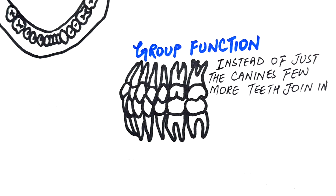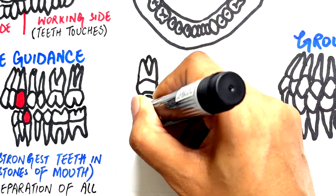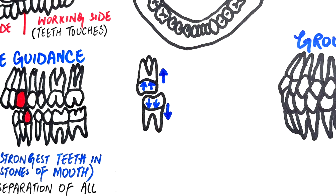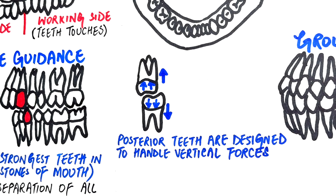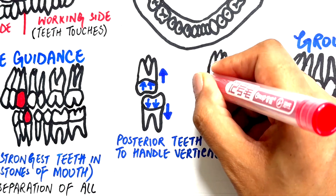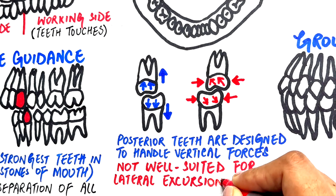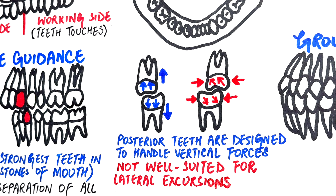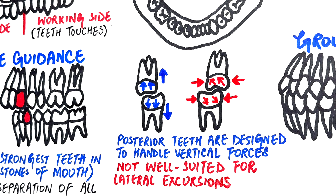Our posterior teeth are designed to handle vertical forces but are not well suited for lateral excursive movements — that's why they should stay apart during side movements, and that's exactly what canine guidance helps achieve. During chewing, canine guidance helps maintain a narrow chewing cycle, guiding the jaw to rely mostly on vertical forces and minimizing harmful lateral stress. Canine guidance promotes disocclusion of the posterior teeth on both the working and non-working sides during lateral jaw movements, helping avoid heavy lateral forces, wear and tear, and reducing strain on the masticatory muscles and the temporomandibular joint.